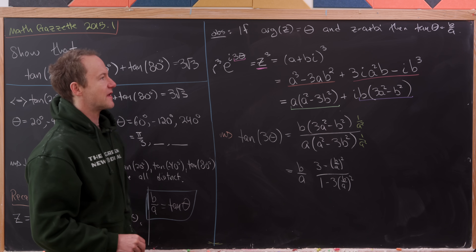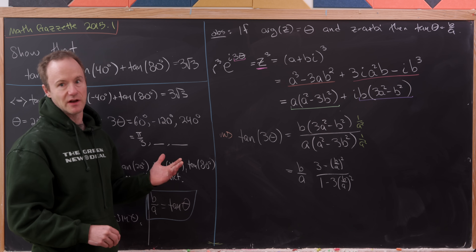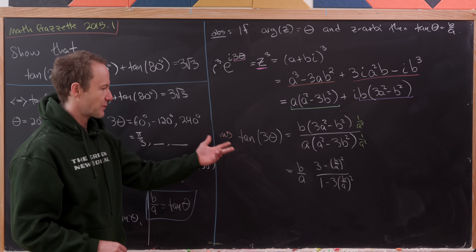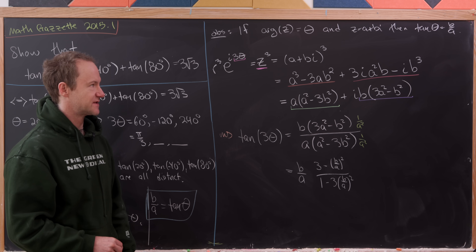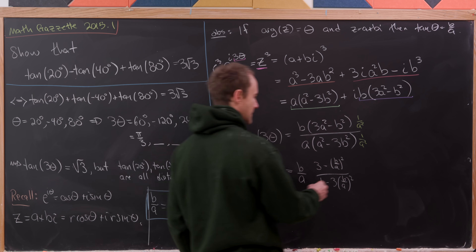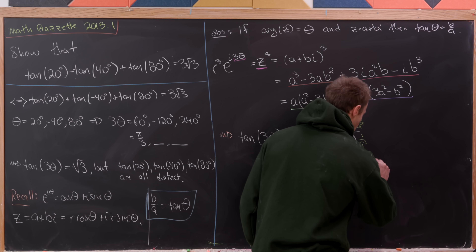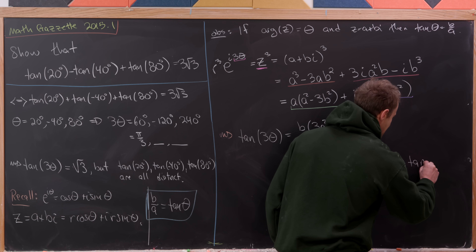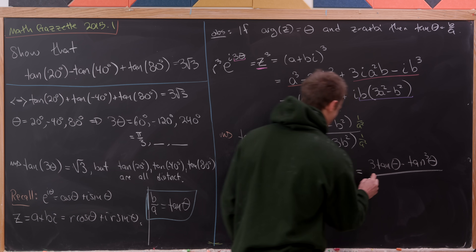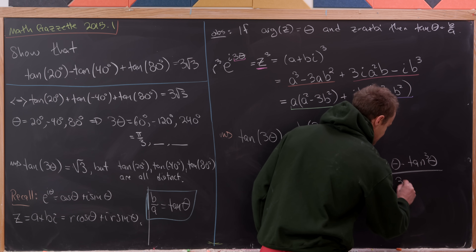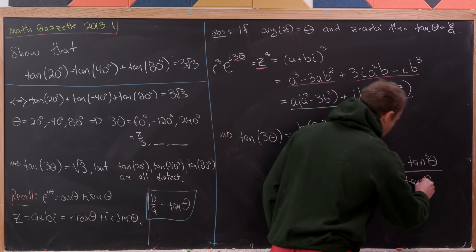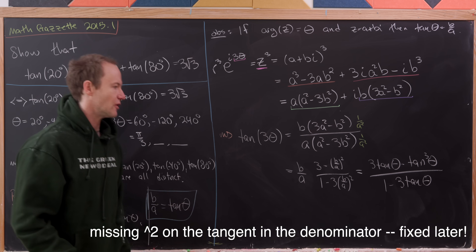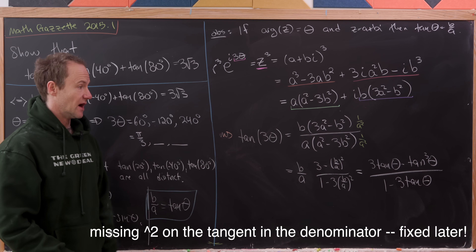Since b over a equals the tangent of theta, we can replace all b over a's with tangent of theta. That gives us the triple angle formula: tangent of 3 theta equals (3 tan theta minus tan³ theta) over (1 minus 3 tan² theta). Now, if theta comes from our set of angles — 20 degrees, minus 40 degrees, and 80 degrees — then tangent of 3 theta equals square root of 3 by our previous discussion.